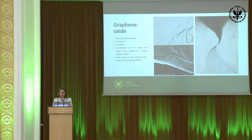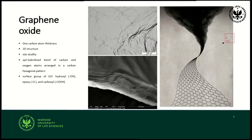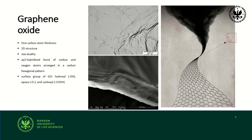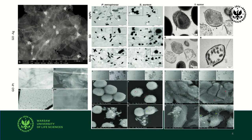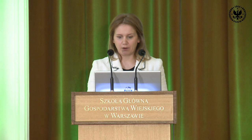Here we can see the morphology obtained by scanning electron microscopy of the graphene oxide, and those pictures present some of the benefits of that material. Graphene oxide is a structure with only one carbon thickness, so it's very thin, and it also presents size duality, which is beneficial for biological applications. We can also observe the sp2 hybridized bonds of carbon and oxygen atoms arranged in a hexagonal carbon pattern. Graphene oxide is also very easy to functionalize with other types of nanoparticles.